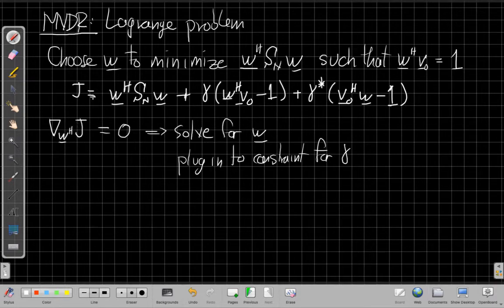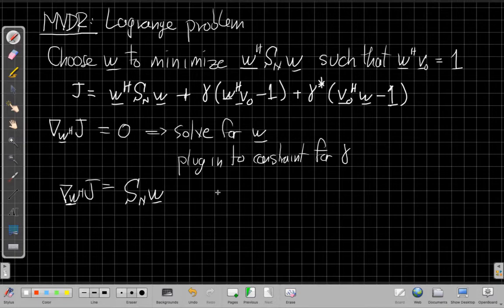So the first step, when we take the derivative with respect to W Hermitian, pretending W Hermitian and W are not the same thing conjugate transpose. It's just this mathematical process or trick we use to find gradients in the complex space and get to the right answer without having to go through complicated, breaking it into real and imaginary parts and all that. So when we do that, if we take the gradient with respect to W Hermitian of J, I'll get S sub N of W.